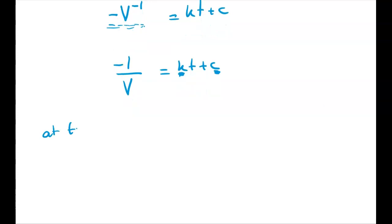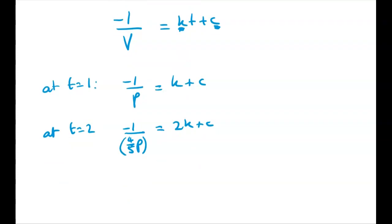So we've got at T equals 1, negative 1 over P is equal to K plus C. And at T equals 2 we've got negative 1 over four-fifths P, which is a bit messy, is equal to 2K plus C. So looking at this hopefully you see pretty quickly that if we do this equation take away this equation we'll be able to eliminate C and get a value for K. So that's what I'm going to do now. But first I'll get rid of the gross green highlighter.